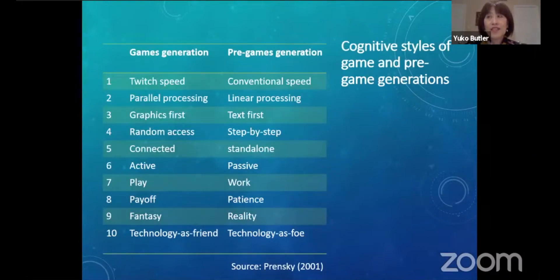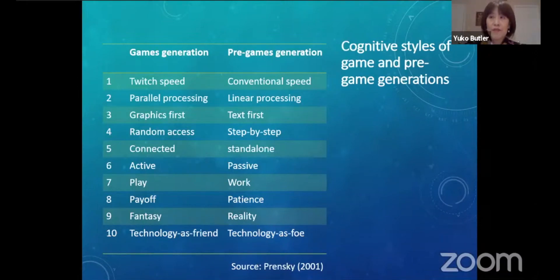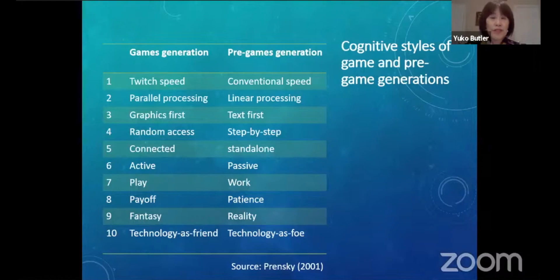It has been suggested that people who have grown up with digital games may have different cognitive skill levels compared with previous generations. Here is what Prensky suggested: game generations are much faster at processing information. They are also more comfortable processing multiple pieces of information simultaneously in a parallel fashion, rather than linear fashion. Graphics are no longer subordinate to text, which would change the way we conceptualize literacy.